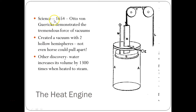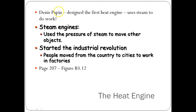In 1654, Otto von Guericke demonstrated the tremendous force of vacuums. He created a vacuum with two hollow spheres, and the vacuum holding them together was so strong that not even a horse could pull them apart. Another key discovery was that water increases in volume by almost 1,300 times when heated to steam. This led to the idea of using steam to move a piston instead of dangerous explosives. Dennis Papin designed the first heat engine, which uses steam to do the work. Steam engines use the pressure of steam to move other objects — this is what began the industrial revolution.